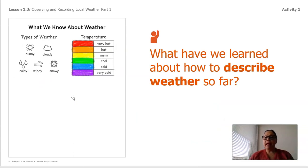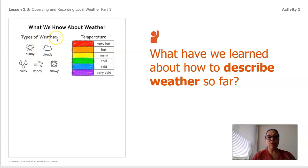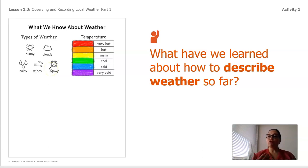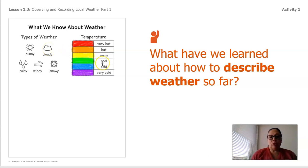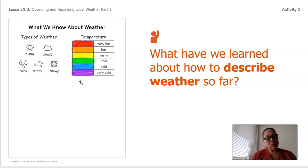Here you can see what we have learned about how to describe weather so far. We've learned that there are different types of weather. Weather can be sunny, cloudy, rainy, windy, or snowy. And when we describe the weather, we talk about the temperature. So if it's sunny, it could be very hot, just hot, or warm. When it's cloudy, it could be cool, and sometimes cloudy and warm. When it's rainy, it could be cool, maybe cold — sometimes warm, depending on where you live.